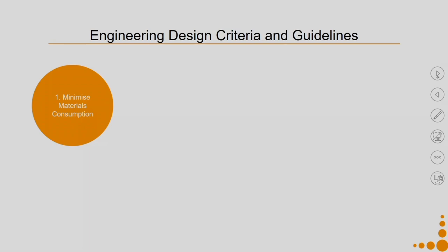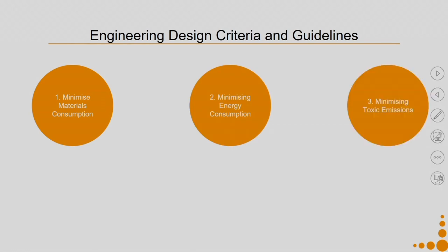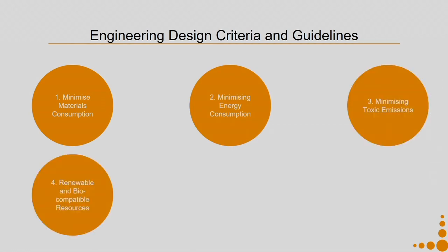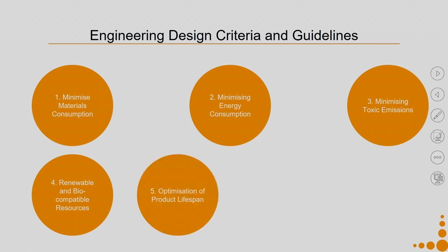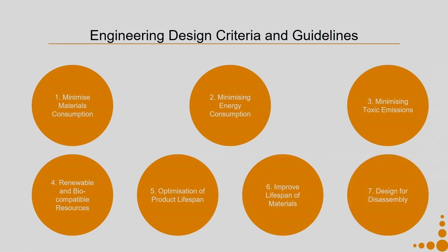The Engineering Design Criteria and Guidelines are as follows: the first criteria is minimize material consumption, second is minimize energy consumption, then minimize toxic emissions, renewable and biocompatible resource usage, optimization of product lifespan and improved lifespan of materials, and finally design for disassembly.